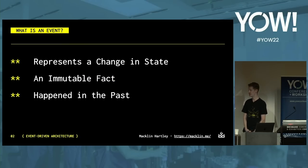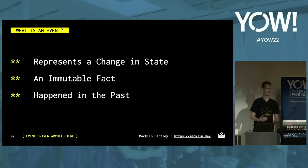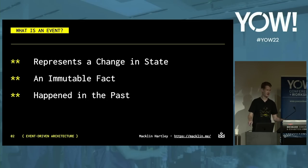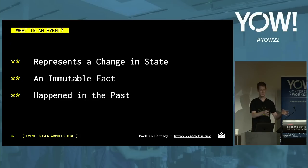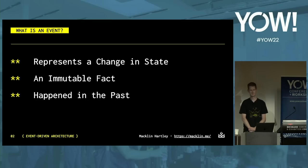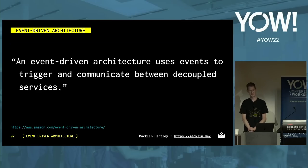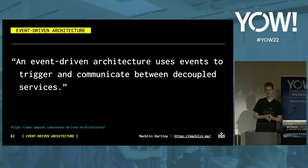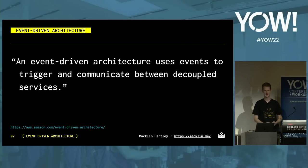First, let's cover exactly what an event is. An event represents a change in state — it's a representation of a thing that happened. It's an immutable fact, so ideally it shouldn't change; we can't rewrite history. And generally it's something that happened in the past, either very recently or a long time ago. AWS defines event-driven architectures as an architecture that uses events to trigger and communicate between decoupled services. It's a really common architecture pattern applied to microservices, and it could be a way to solve some of our microservices issues.